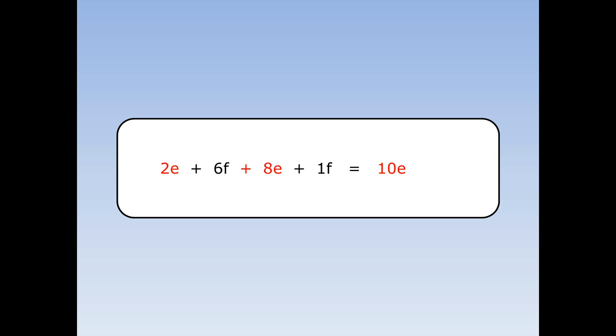Next, I'm going to add the fish together. Six fish plus one fish is seven fish. So our answer is ten eggs plus seven fish.